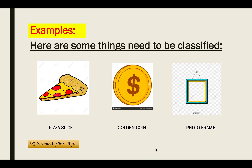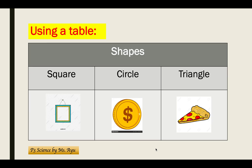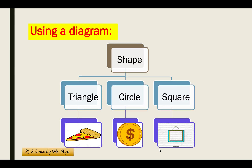Here is an example of classifying things. We have three objects to classify: a pizza slice, a golden coin, and a photo frame. I am classifying those things according to their shape. This is the diagram — at the top we have 'Shape,' which then divides into three boxes in the middle.